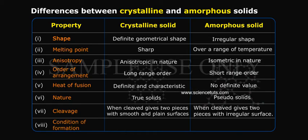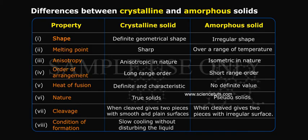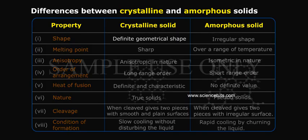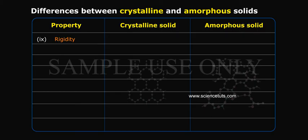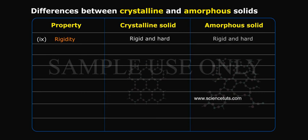Property 8: Conditional formation. Crystalline solid — formed by slow cooling without disturbing the liquid. Amorphous solid — formed by rapid cooling by churning the liquid. Property 9: Rigidity. Both crystalline solid and amorphous solid are rigid and hard.